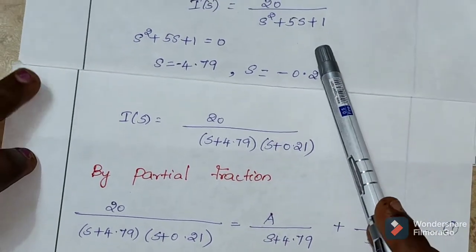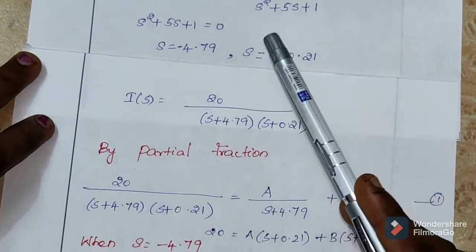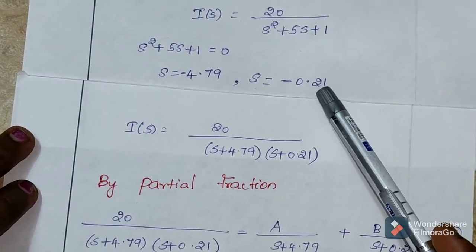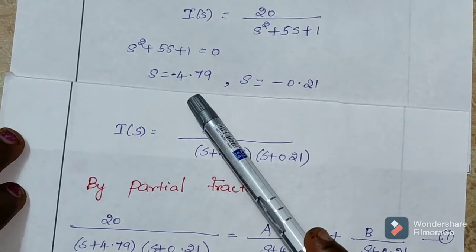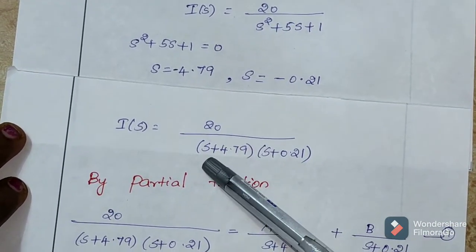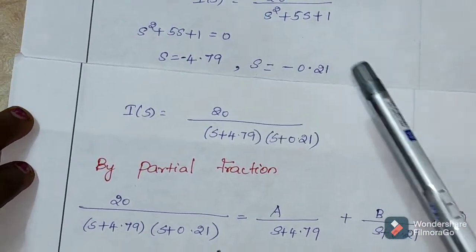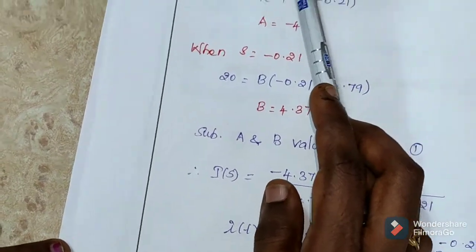So, the factors of s squared plus 5s plus 1 is s plus 4.79 and the another one is s plus 0.21. So, s is equal to minus 4.79 and s plus 4.79 is equal to 0. We have to find out I(t). So, apply partial fraction.